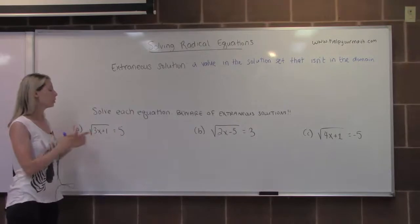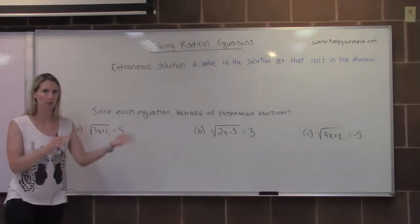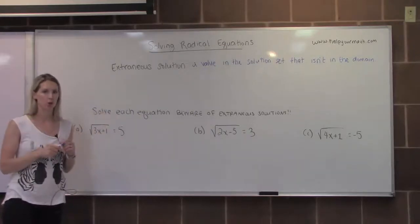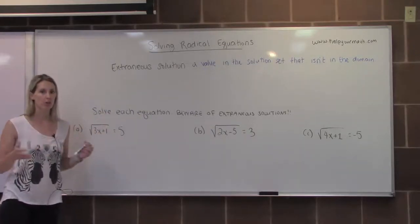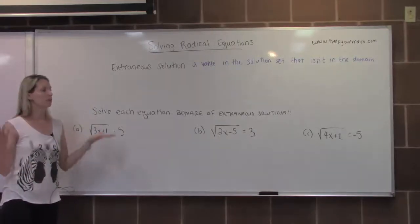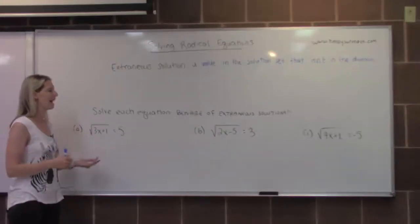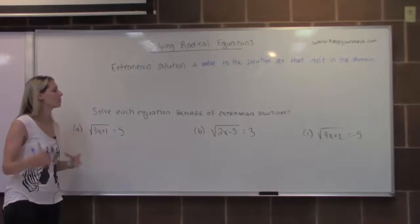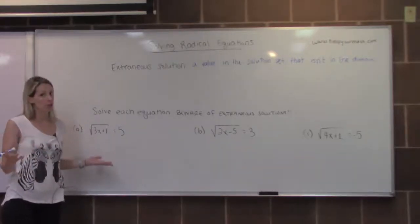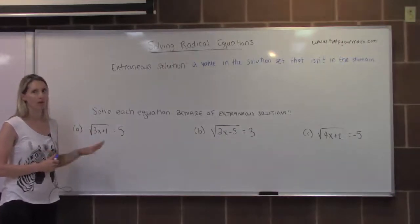You can figure out the domain first — the allowable values for x — and check whether your solutions fall into the domain. Or you can solve the problem, get x equals 2 and x equals 3, and then check both by plugging them into the original equation to see if they create a true statement. That's generally my philosophy when doing radicals.